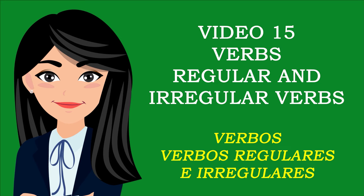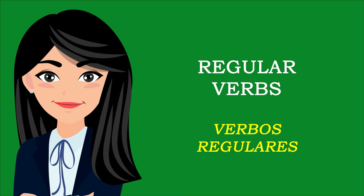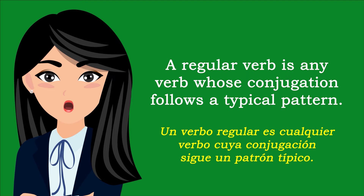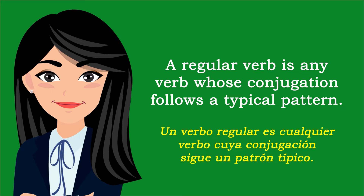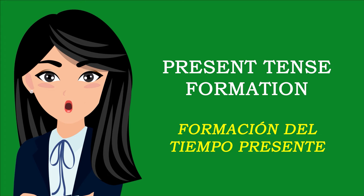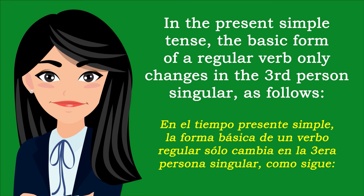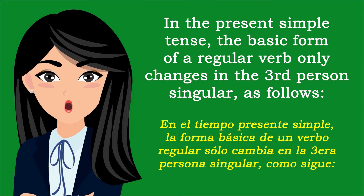Verbs: Regular and Irregular Verbs. A regular verb is any verb whose conjugation follows a typical pattern. In the present simple tense, the basic form of a regular verb only changes in the third person singular, as follows.